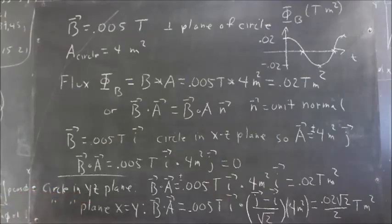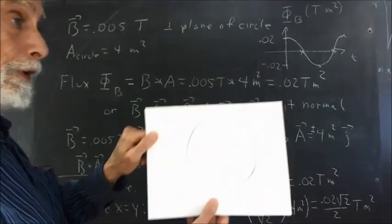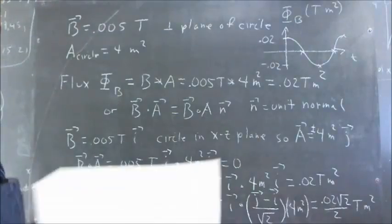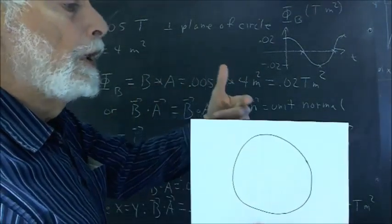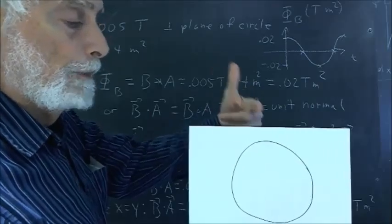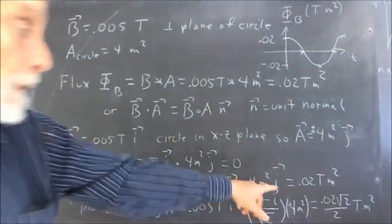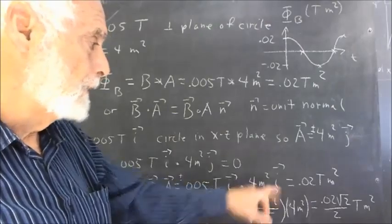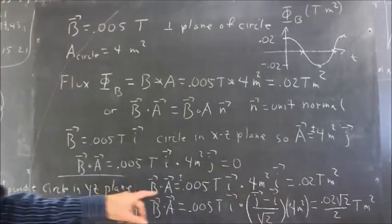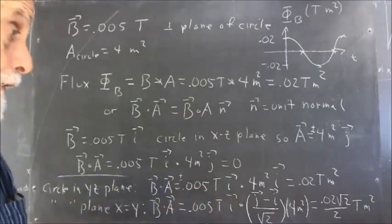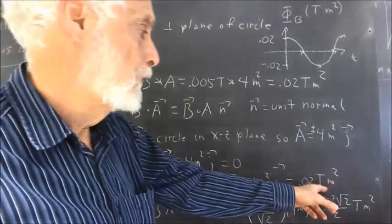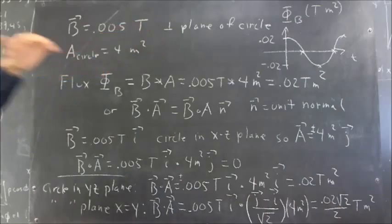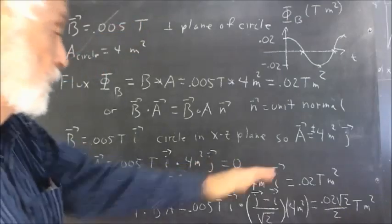Now if the circle is in the YZ plane, the normal vector points in the direction of the positive x-axis — the normal vector is the I-vector. So the area vector is four square meters times I⃗. When we dot that with the magnetic field vector B⃗, we get 0.02 Tesla·meters squared, the same result as in the case where the magnetic field is perpendicular to the plane of the circle. Everything works out as it should.